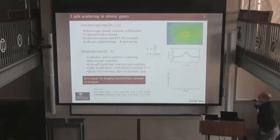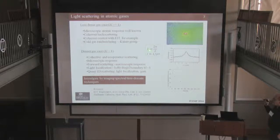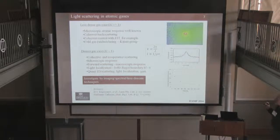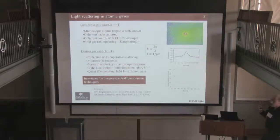Broadly speaking, in light scattering in atomic gases, we start with a low density gas. A low density gas is characterized by the product KL being much greater than one, where L is the transport mean free path for light scattering and K is the wave vector of the light. This corresponds to a very dilute gas. Under those circumstances, the microscopic atomic response is well known. At least in weak fields, coherent backscattering can occur, including coherent control of multiple scattering using EIT or Raman configurations. One of the more intriguing results is the demonstration of random blazing in three dimensions, which came out of Robin Kaiser's group and appeared in Nature a few months ago.